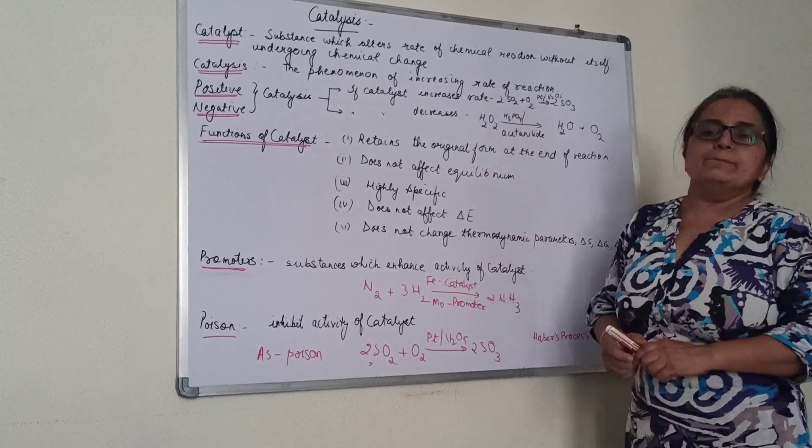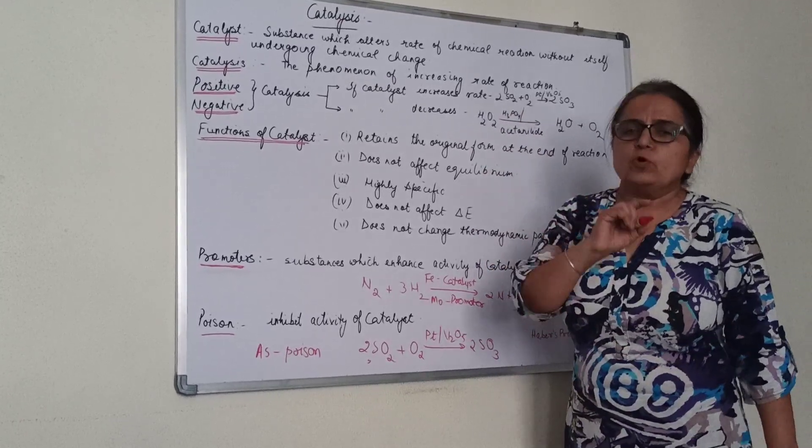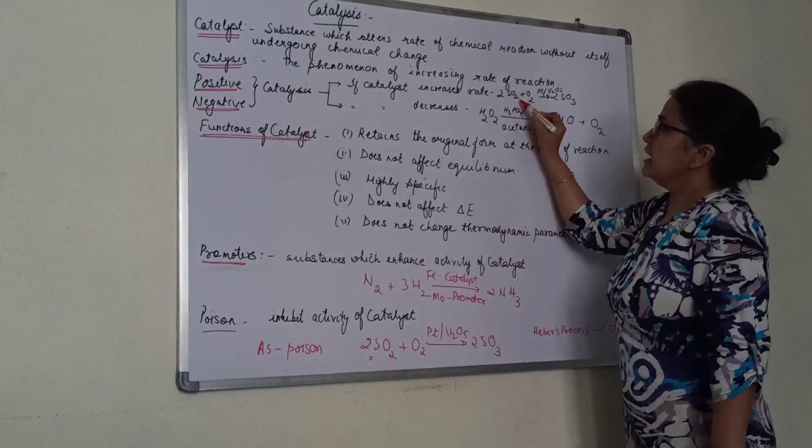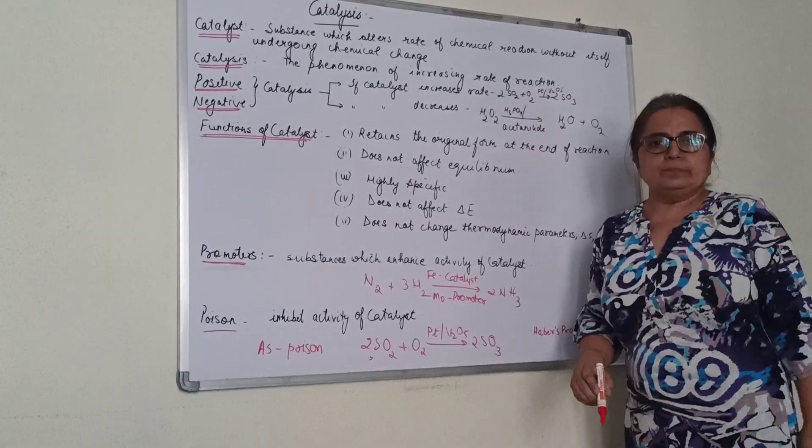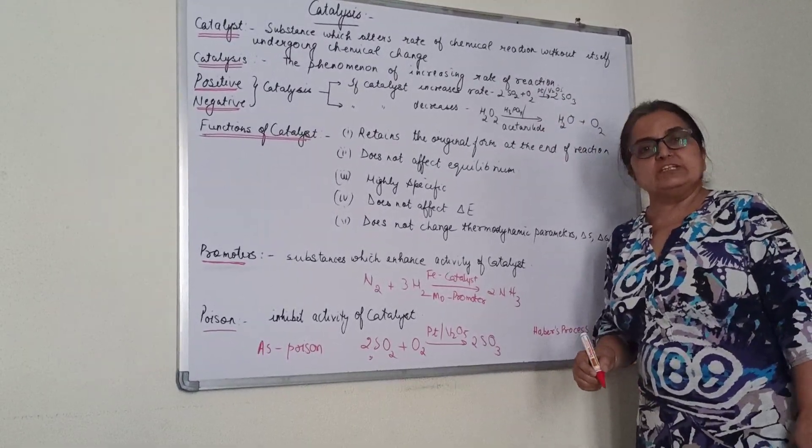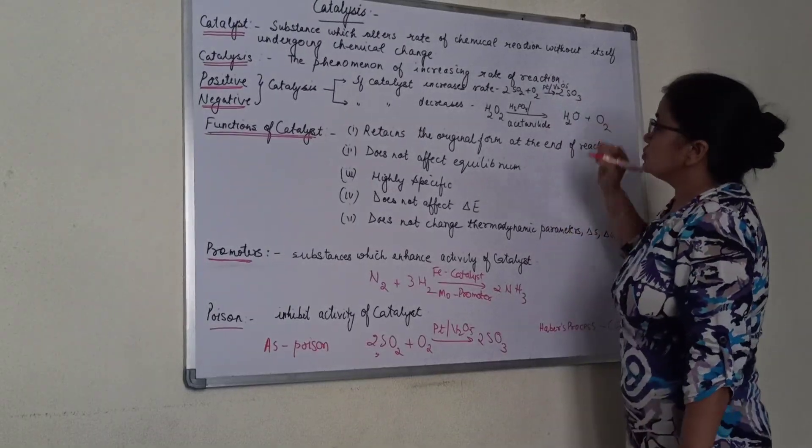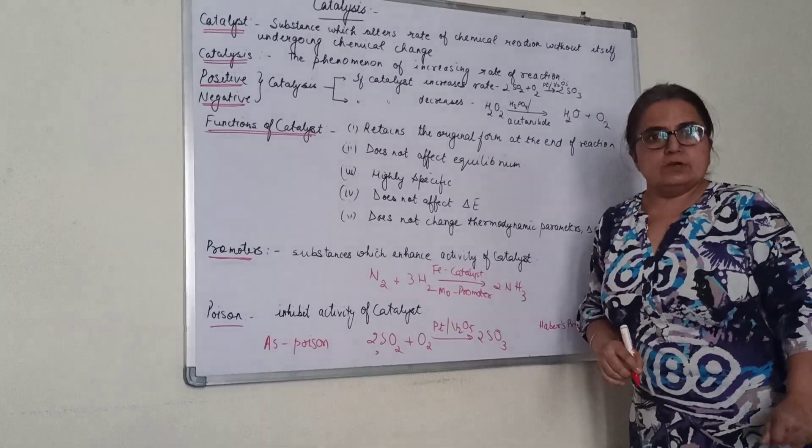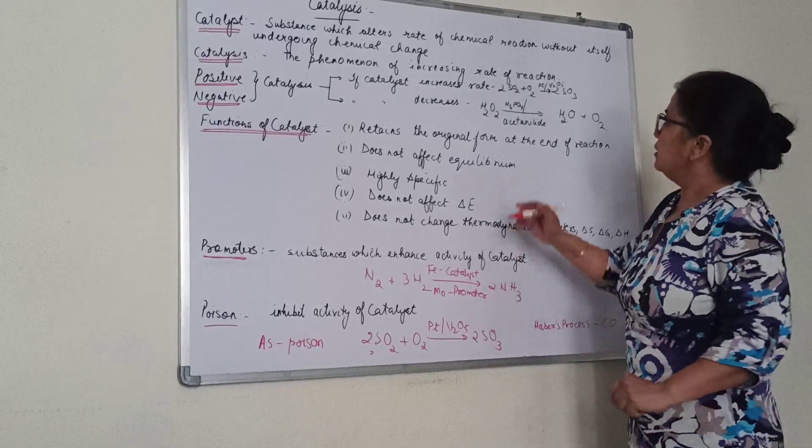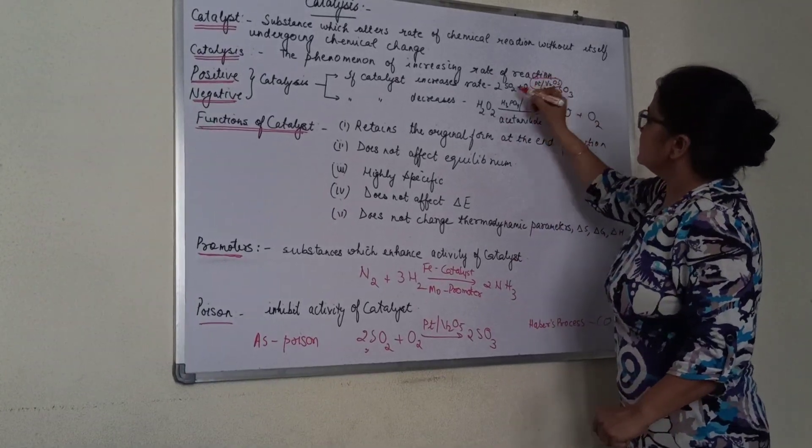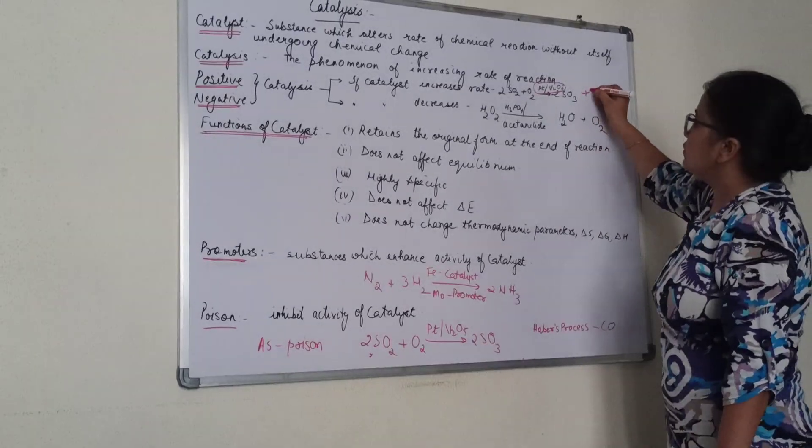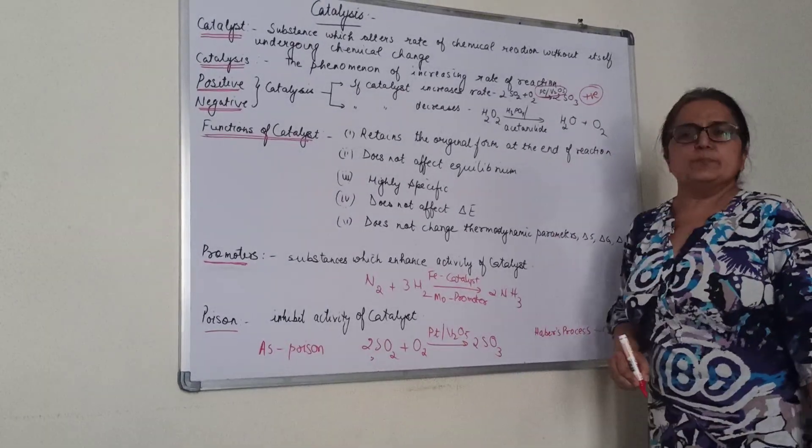Here are two examples. Sulfur dioxide plus oxygen—the reaction occurs in the presence of platinum or vanadium pentoxide to form SO3. This is the contact process to prepare sulfuric acid. This increases the rate of reaction, so this is an example of a positive catalyst.